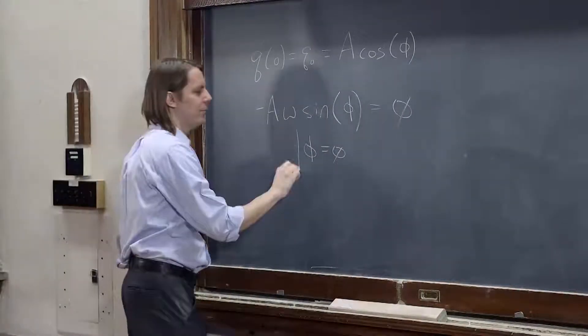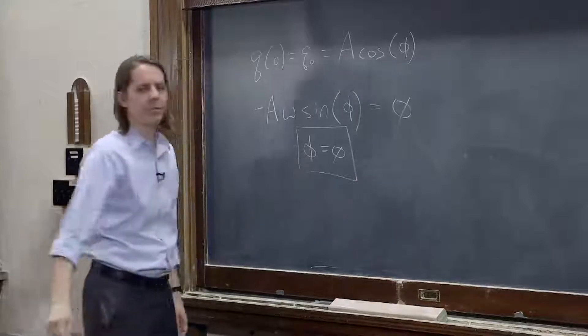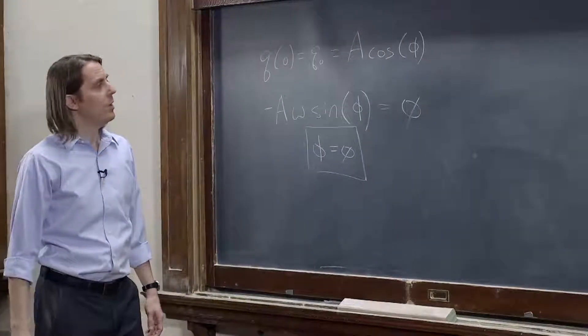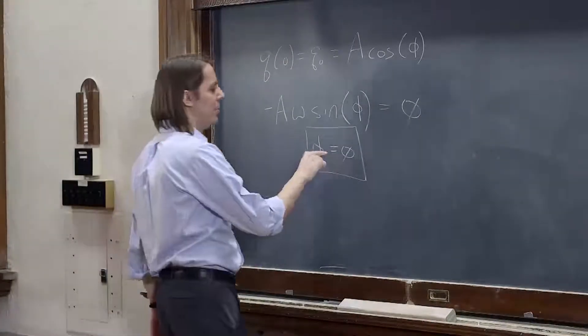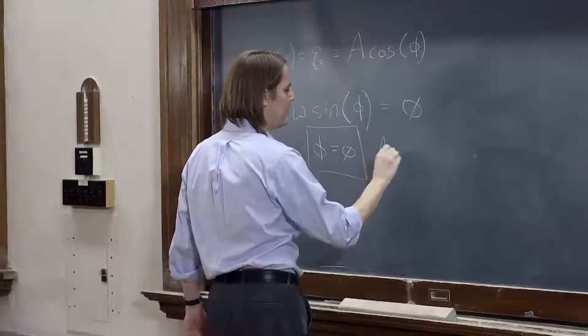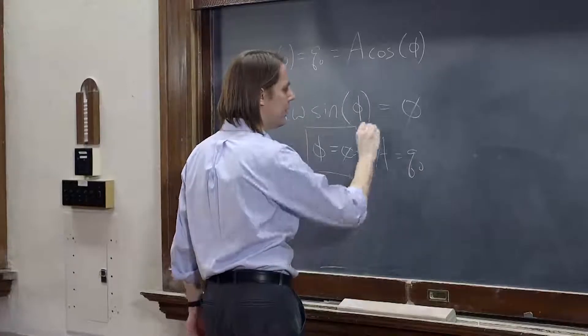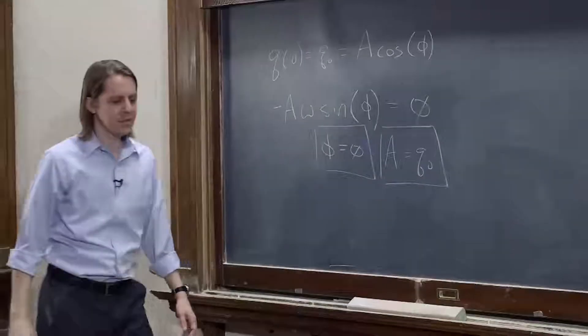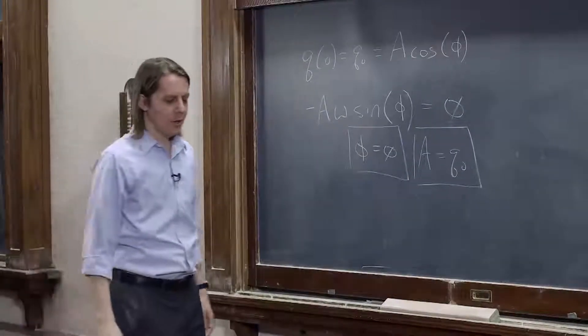So if that is true, then we plug zero into here, cosine zero is one, and of course, again, A equals q naught. Pretty much the same thing we did last time.